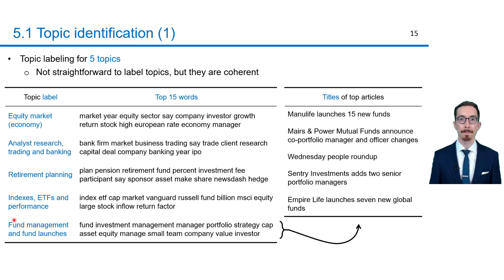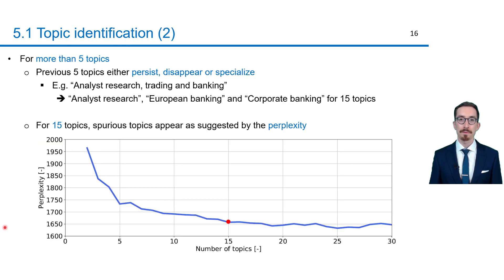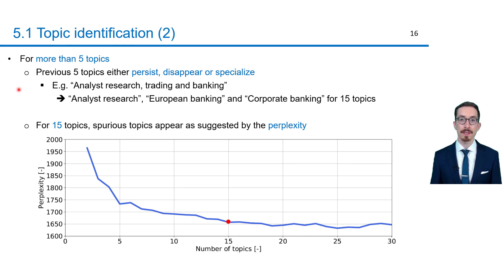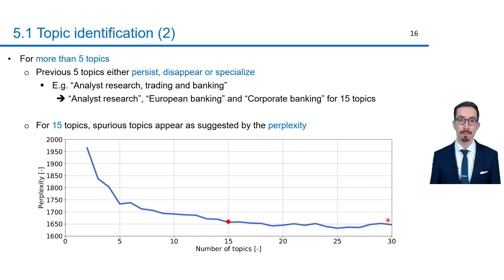For more than five topics, the previous five topics either persist, disappear, or specialize. For instance, analyst research trading and banking becomes analyst research, European banking, and corporate banking when 15 topics are identified. Spurious topics, however, start to appear for 15 topics as suggested by the perplexity, which is a performance indicator of topic models. In fact, for more than 15 topics, the perplexity does not significantly decrease anymore.